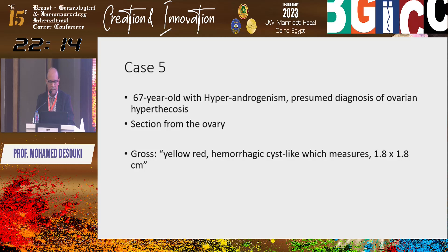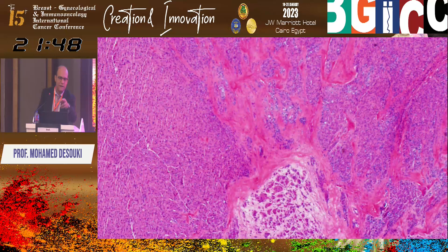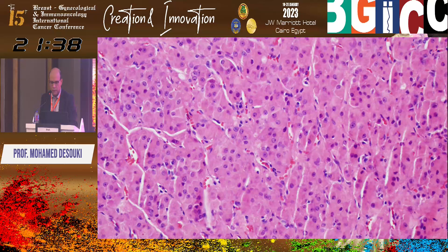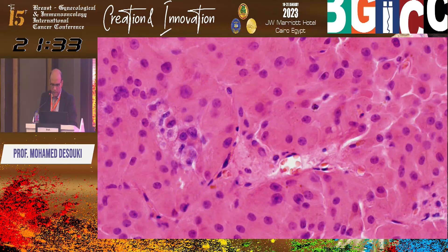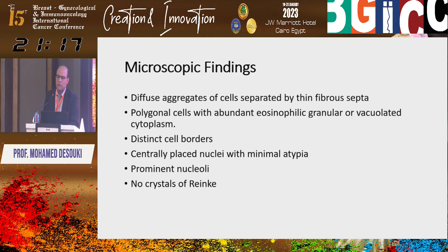Case number five: 67-year-old with hyperandrogenism, presumed diagnosis of ovarian hyperthecosis. Section from ovary shows yellow-red hemorrhagic cyst-like area measuring 2 cm. Eosinophilic cytoplasm (not clear cytoplasm as in the previous case), central nuclei, prominent nuclei, no much atypia. Nested pattern with plenty of cytoplasm, central nuclei, prominent nuclei. Looking for crystals of Reinke but not seeing them. Diagnosis: steroid cell tumor, NOS.